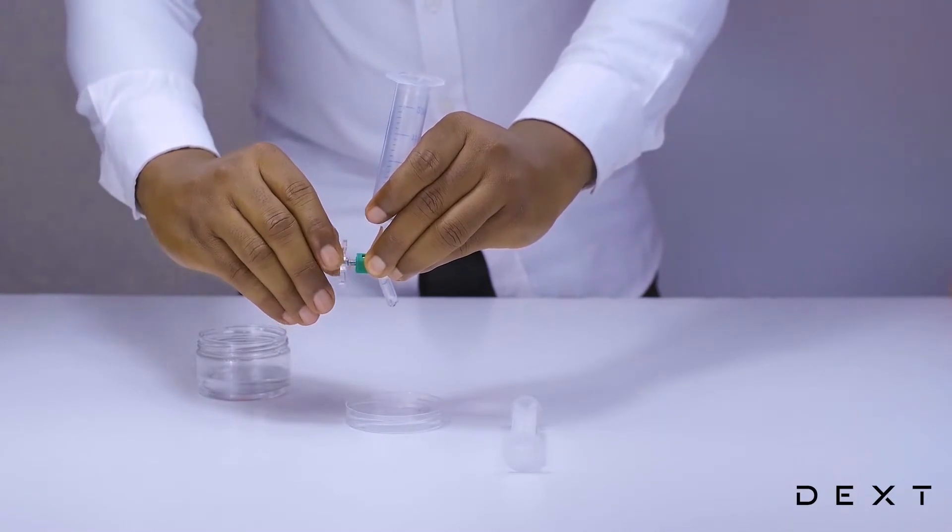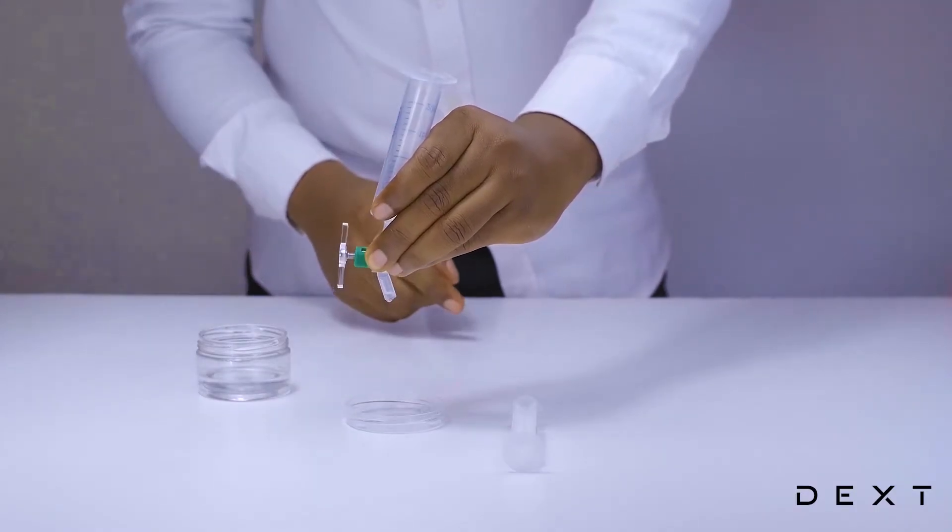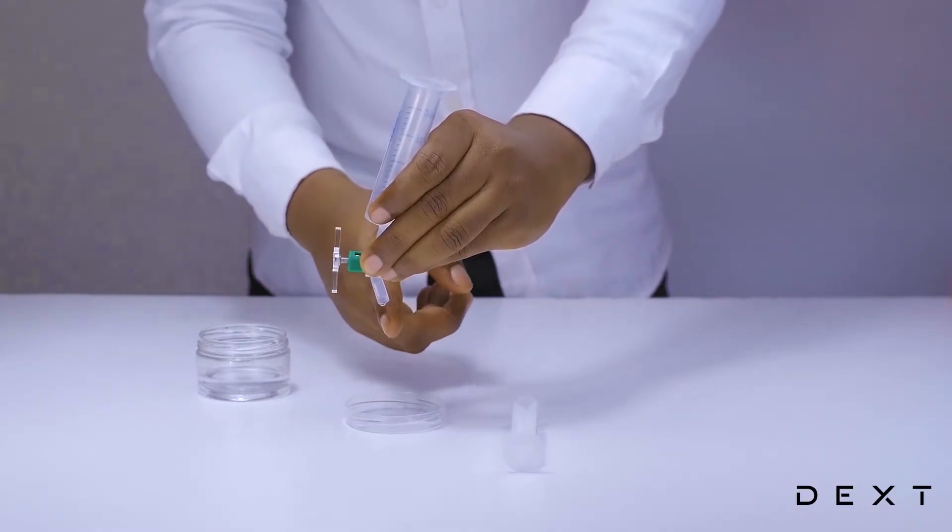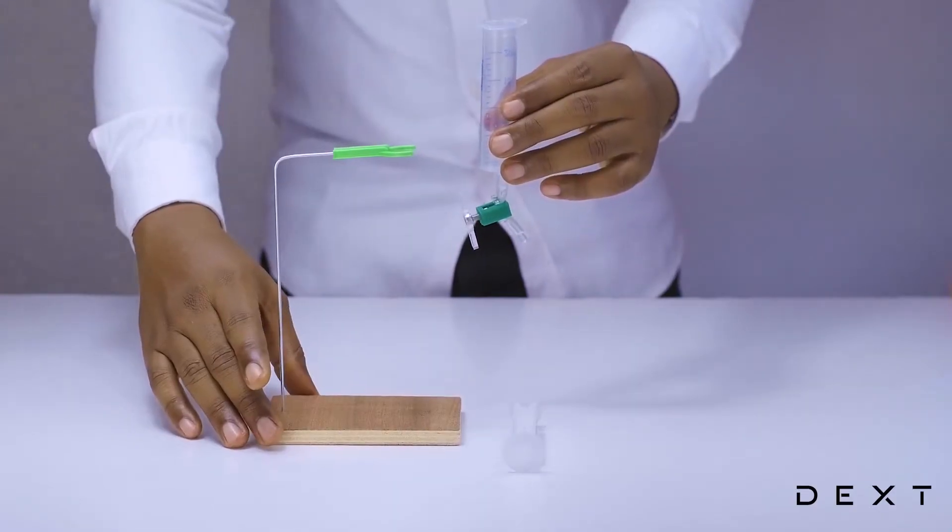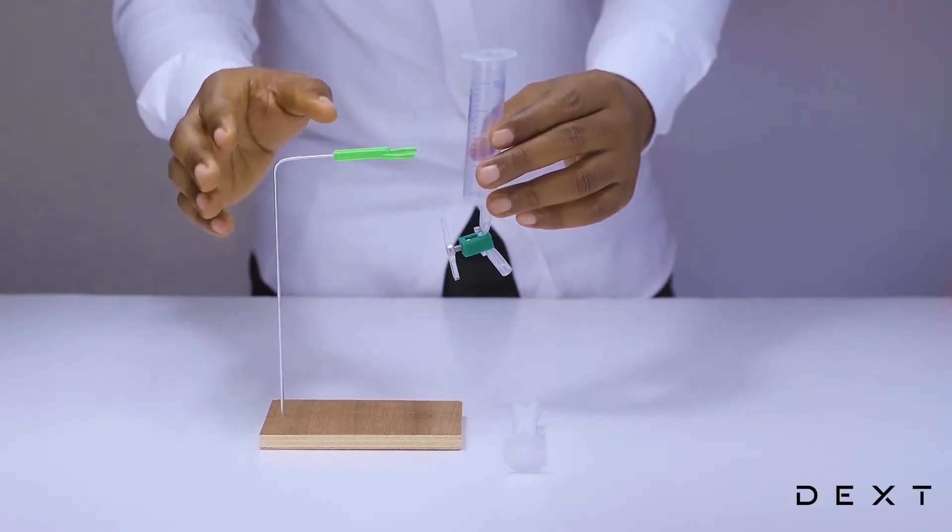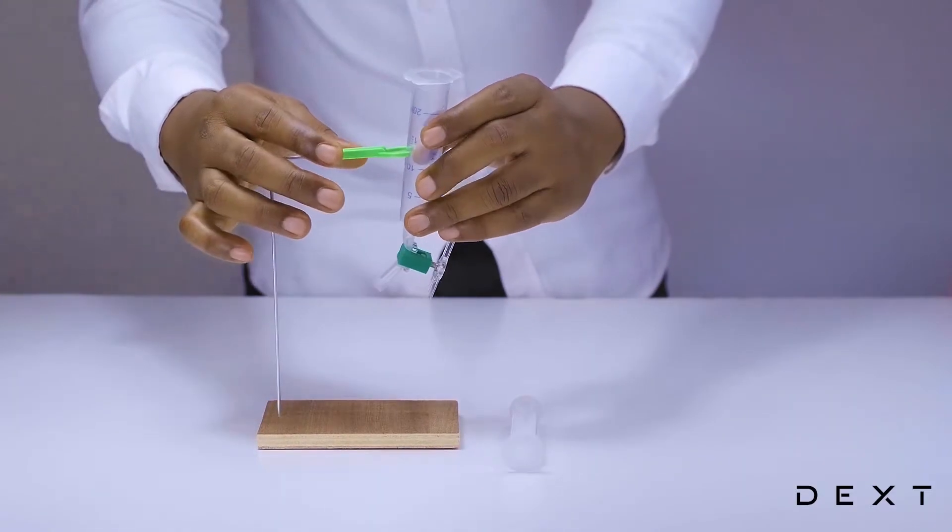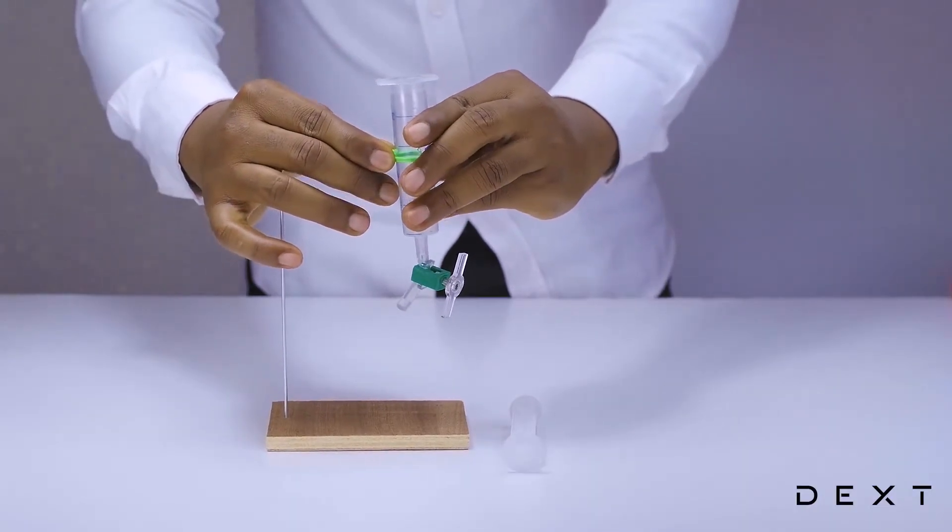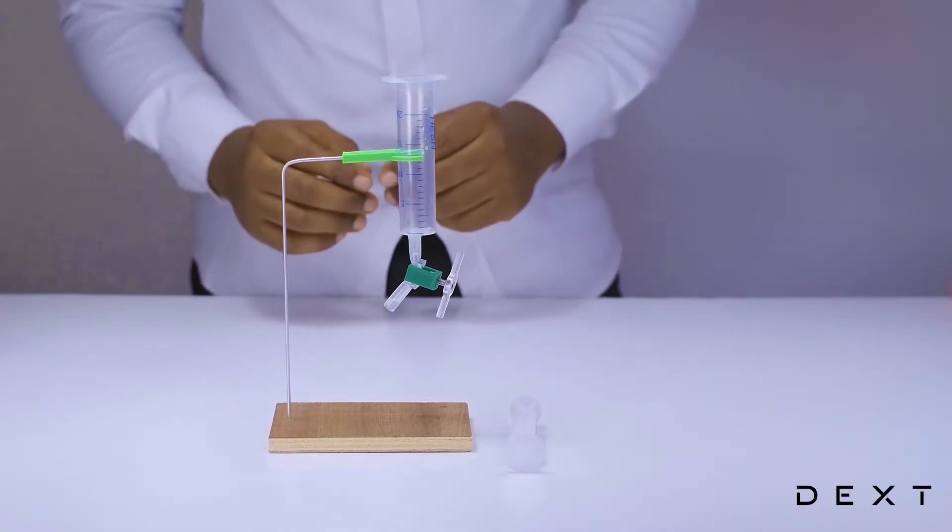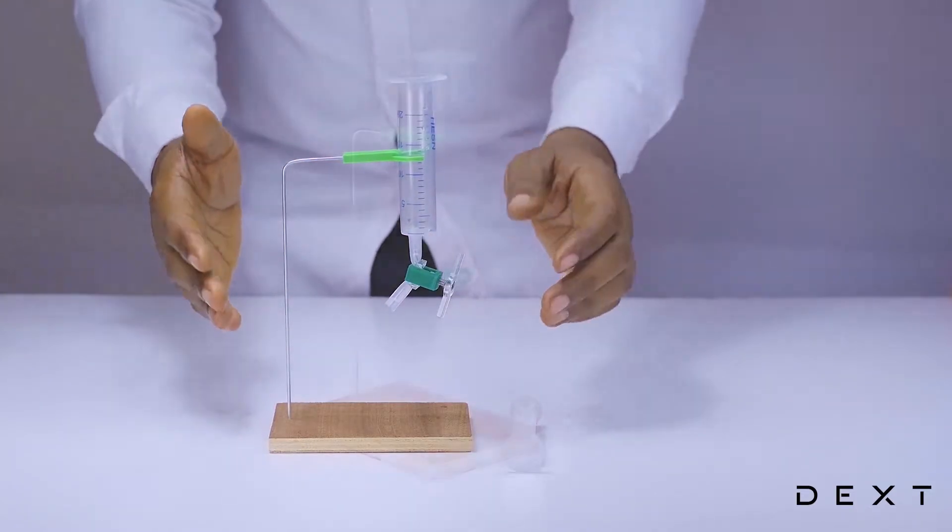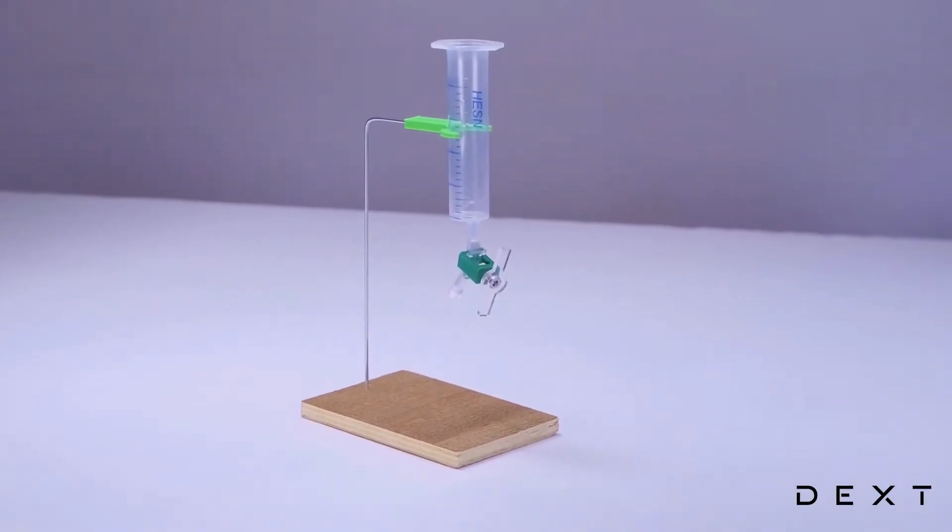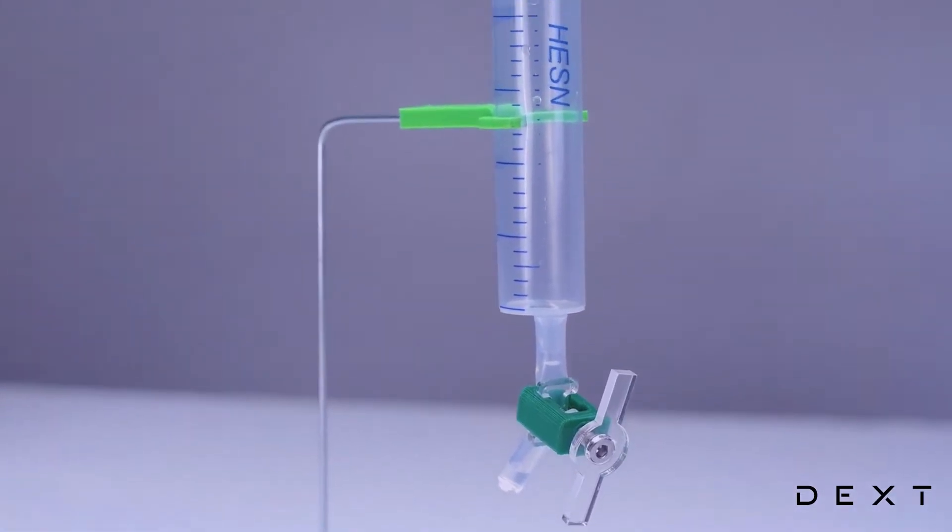Again, be careful not to tighten too much so as not to break your plastic piece. Now that the whole thing is set, we are going to place it gently onto our plastic holder. And once that is done, there you have a very simple setup with your improvised separating funnel to separate some immiscible liquids.